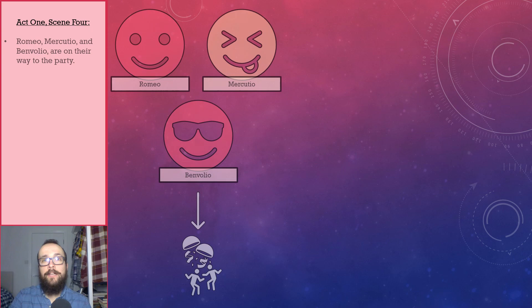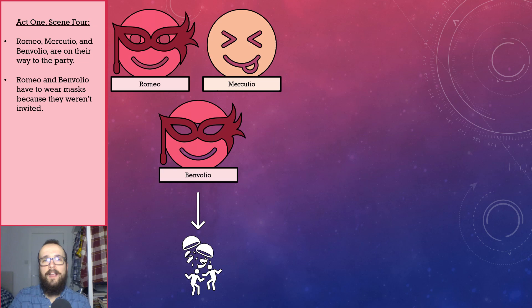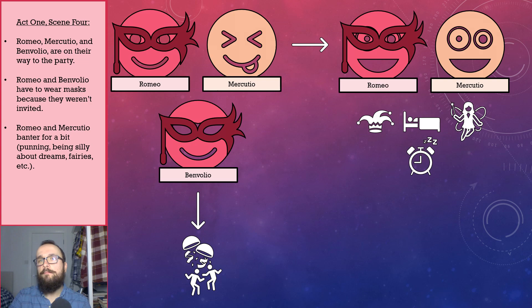Act 1, scene 4 sees Romeo and his two close friends, Mercutio and Benvolio, making their way to the Capulet party. Romeo and Benvolio, who are both Montagues, have to wear masks because they were not explicitly invited to the party. This was quite normal practice for the time — if you wanted to go to a party you weren't invited to, you had to wear a mask and be prepared to give a speech to the host. Mercutio does not need to wear a mask, as he was on the invites list. He is neither a Montague nor a Capulet, and is in fact a distant relative of Paris and the Prince. As they walk to the party, Romeo and Mercutio banter for a bit, exchanging puns, and Mercutio jokes about dreams and fairies in a way that teases Romeo. The level of banter shows that they have a pretty strong friendship.